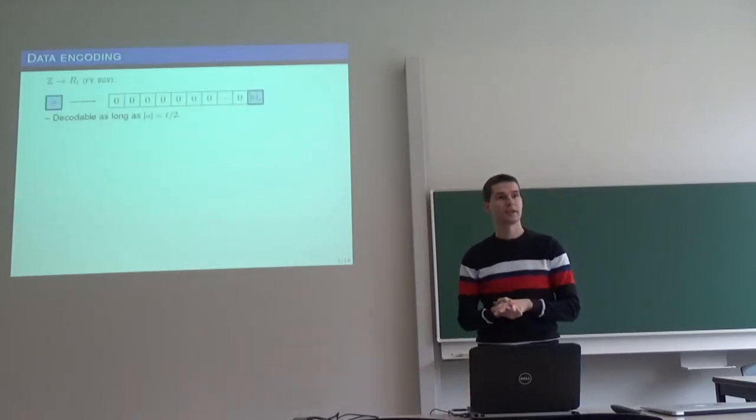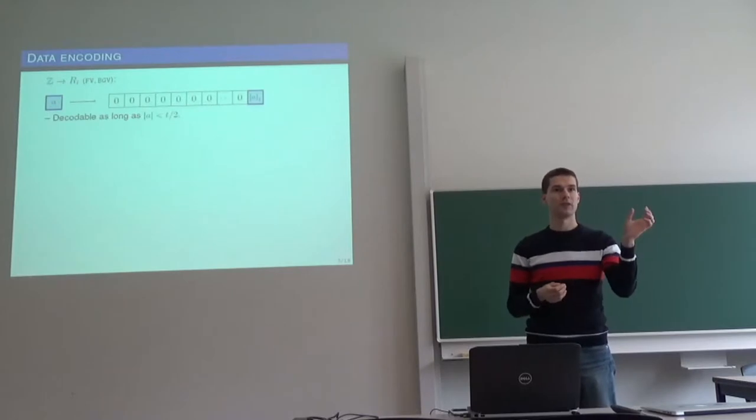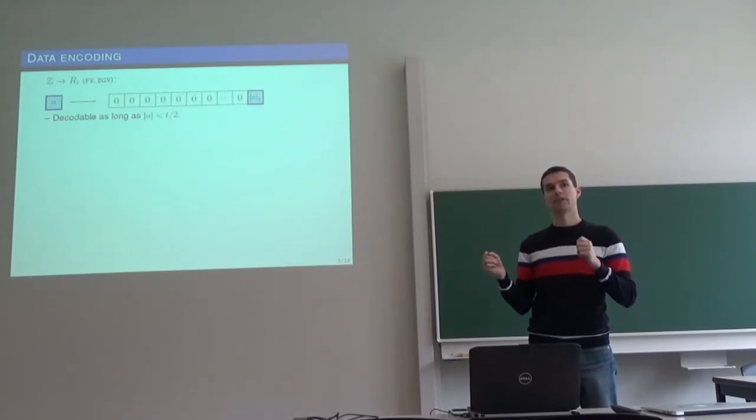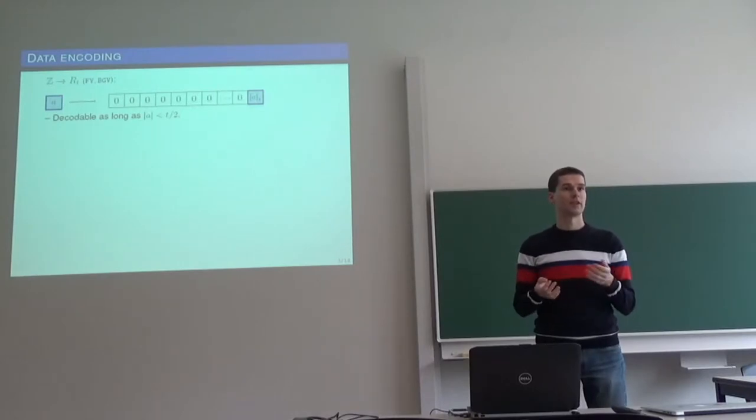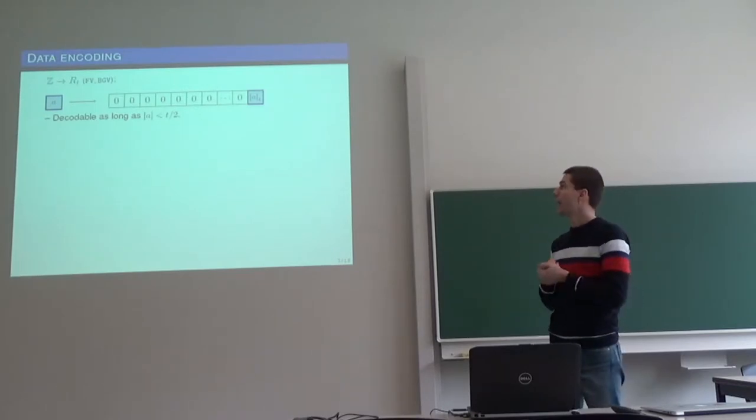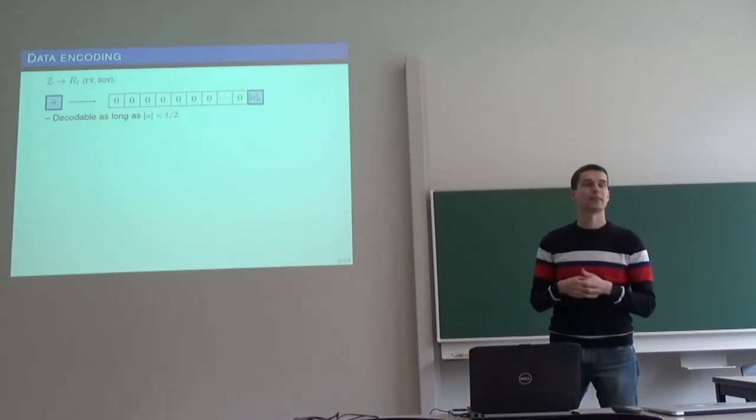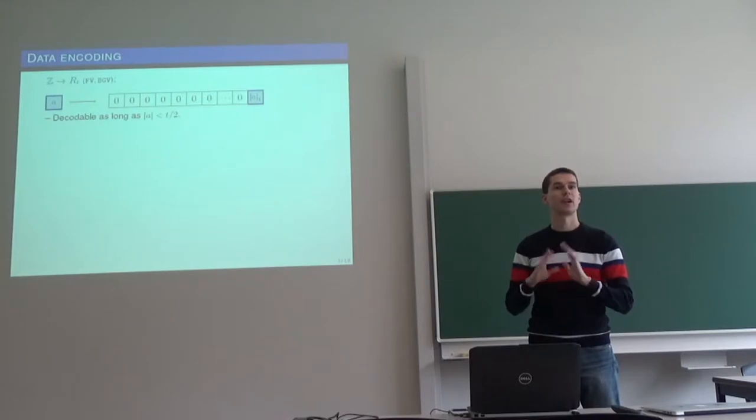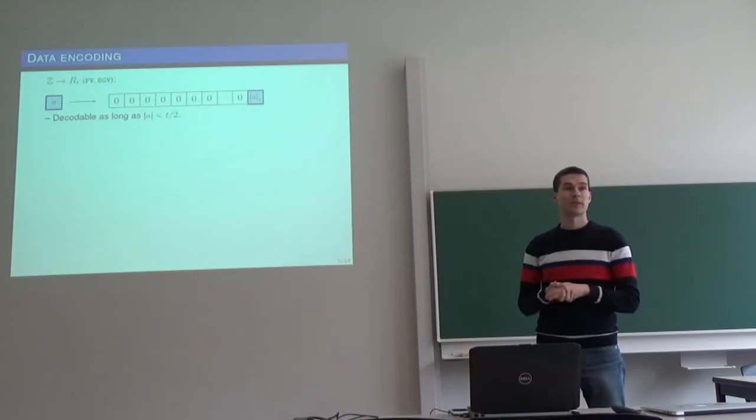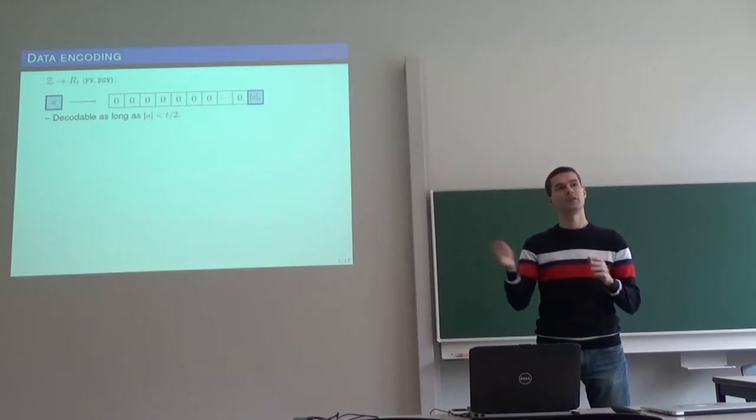So how to encode information essentially to this space r_t? For example, we have integers. Then the very naive approach would be to encode this integer as a constant term of a polynomial. But this encoding introduces some problems. Essentially, when you multiply things, this constant term will grow, and at some point it will wrap around modulo t. And in this case, you can't decode that. And this is not really nice because t, this parameter, is usually pretty small. It might be just a couple of thousands, so we can't perform a lot of computations. And another problem is, as you can notice, we don't use the plaintext space properly. We just use one coefficient, but the rest remains zero.